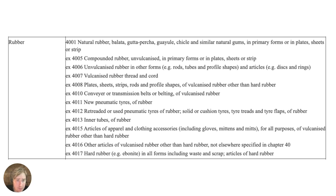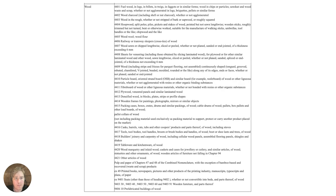There's also a broad catch-all: HS code 4016, 'other articles of vulcanized rubber not mentioned elsewhere.' Then we have wood — a lot of materials used in construction and buildings, but also consumer goods like tableware and kitchenware made of wood, and even printed books and newspapers. It's fairly comprehensive when it comes to the products affected by the EUDR.